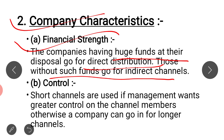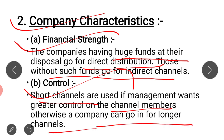Another company-related factor is the degree of control. If a firm needs more control over distribution, then they prefer short channels and direct channels. If the firm doesn't need much control over the distribution channel, then they can easily use longer channels to sell their products to customers.